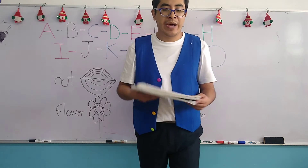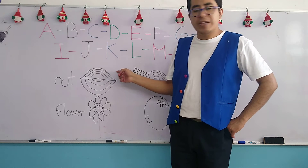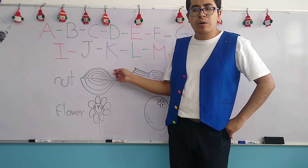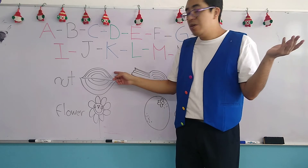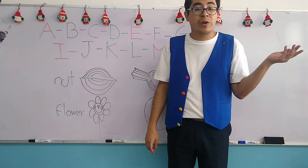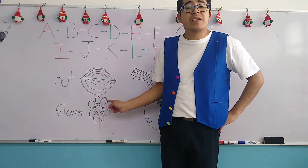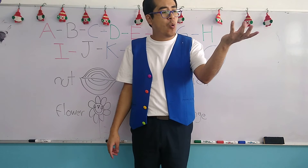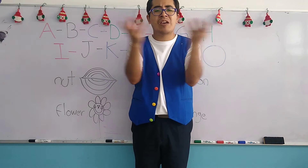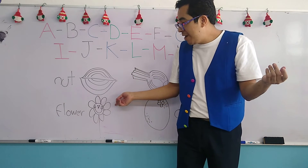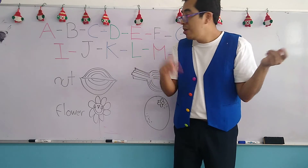Let's see what objects begin with the letter O. Here we have the nut — does it begin with O? N-U-T... it's not the same, so the nut we skip it, no lo coloreamos. Now the flower — does it begin with O? F-L-O-W-E-R... no, it doesn't sound the same. So the flower we don't paint either — no lo coloreamos. The nut and the flower: no.